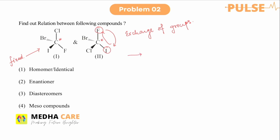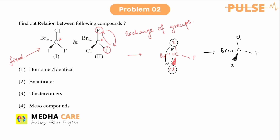After the exchange, the new structure has iodine in one position and fluorine in another, with chlorine and bromine on the rear side. We then do the same operation exchanging iodine and chlorine. After this second exchange, the structure we get is identical to structure one.